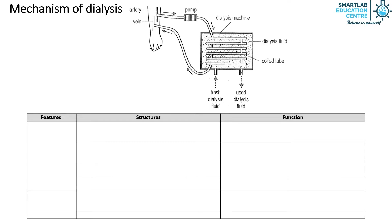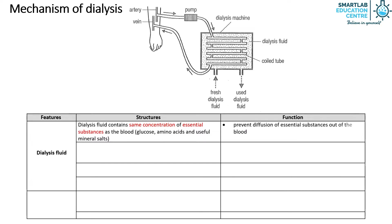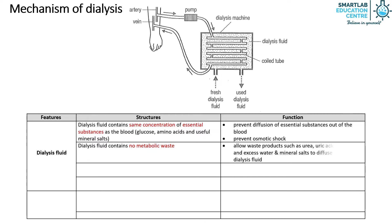Secondly, let's look at what is in the dialysis fluid. As mentioned earlier, the dialysis fluid contains the same concentration of essential substances as the blood. This is to prevent diffusion of essential substances out of the blood, and to prevent osmotic shock from occurring as well. The dialysis fluid contains no metabolic waste, to allow waste products such as urea, uric acid, creatinine and excess water and mineral salts to diffuse out into the dialysis fluid.